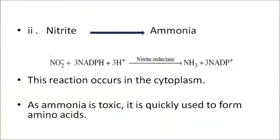The second step: the nitrite formed is further converted to ammonia. This process also requires a specific enzyme — nitrite reductase — and the reaction occurs in the cytoplasm. The ammonia formed is toxic and therefore must be quickly used in the form of proteins by way of amino acid metabolism.